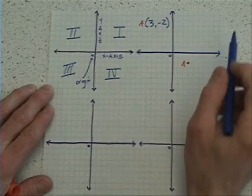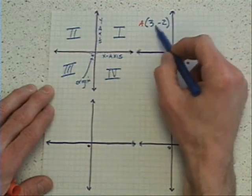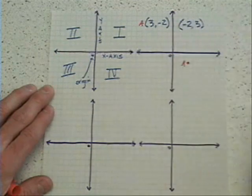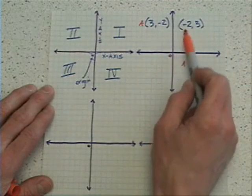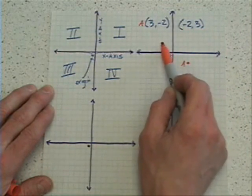Just to show you that ordered pairs do mean that order is important, what if I change these up a little bit, change the order of these two values to negative two first, and then positive three? Well, if we did that, we would have to go from the origin, negative two to the left, one, two, and three spaces up.